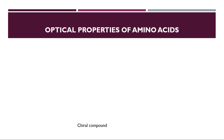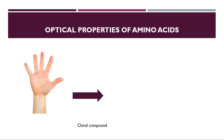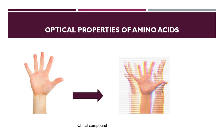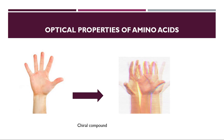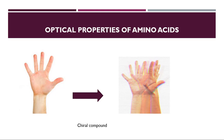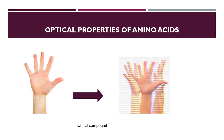The first thing we need to understand is the chiral compound. Now look at this hand. If I put this hand in the mirror and turn it around, we have a lot of different kind of configurations. So if a compound has more than one configuration like a mirror image, then it's called a chiral compound.